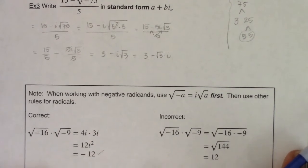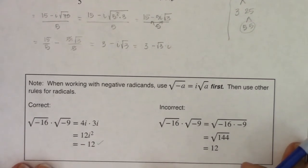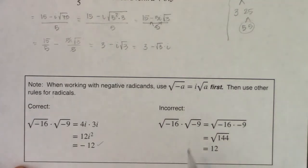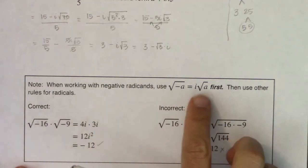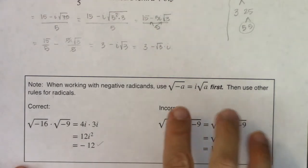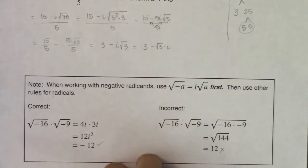And you can see those are different answers. Let me scooch that up so we have enough room to see it. These are different answers. This is incorrect because it's lacking the negative here. This is correct. So you want to make sure again when you have negative radicands take out the imaginary portion first. Then use your other rules for radicals.